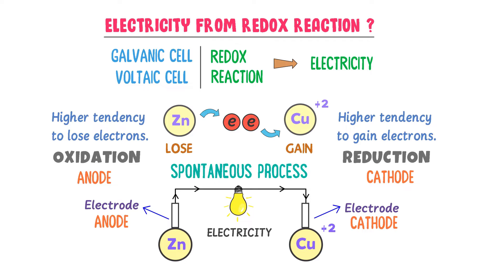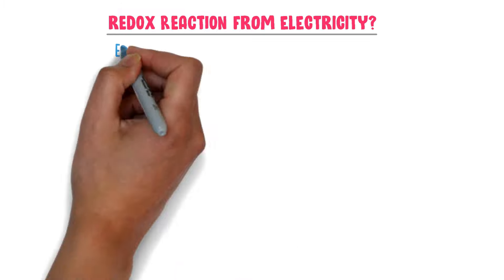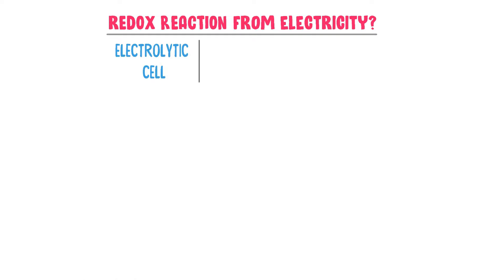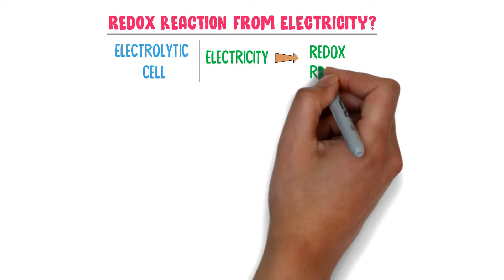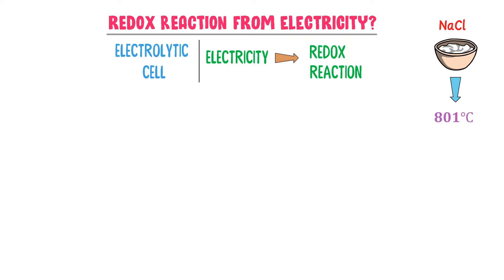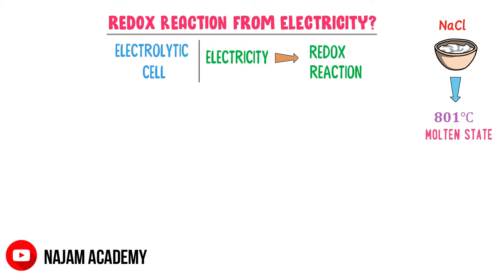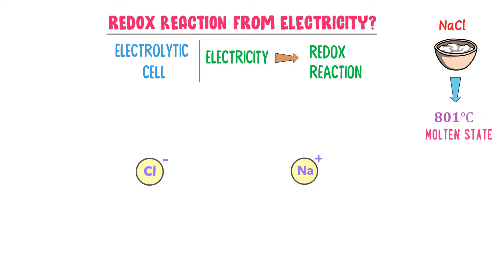How can we produce a redox chemical reaction using electricity? We use an electrolytic cell to generate a redox chemical reaction — electricity is used to generate the redox reaction. For example, consider table salt, sodium chloride. If we provide high thermal energy and raise its temperature to 801°C, sodium chloride is converted from solid state to molten state. In the molten state there are two types of ions: sodium ion and chlorine ion. There is one extra electron present with chlorine, and sodium needs one more electron. But the problem is that chlorine does not lose its electron on its own.